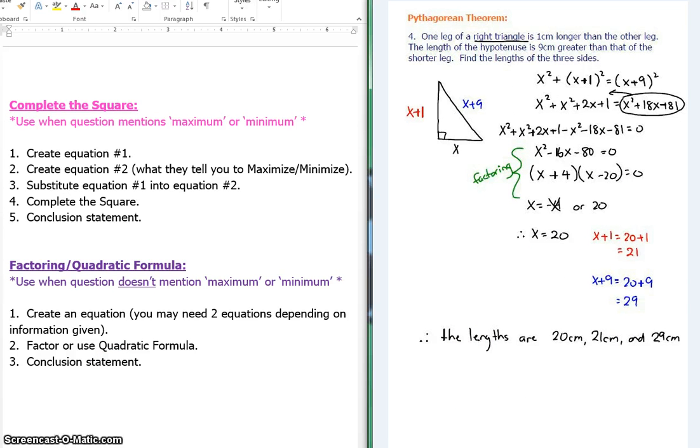The last question that's kind of popular is the Pythagorean theorem question. So number four, one leg of a right triangle is one centimeter longer than the other leg. The length of the hypotenuse is nine centimeters greater than that of the shorter leg. Find the lengths of the three sides. No mention of max or min. We're factoring or using the quadratic formula. What I decided to do was I decided just to draw a picture. So we have, one leg of a right triangle is one centimeter longer than the other leg. So here's the other leg. I just represented it as x. And here's the one centimeter longer side. Then we have the hypotenuse, which is nine centimeters greater than that shorter leg. So then we get x plus nine.